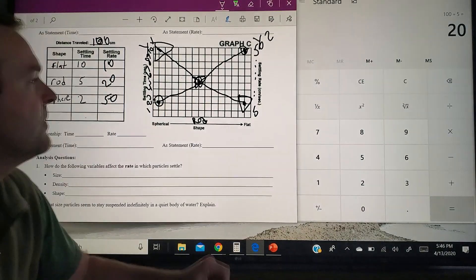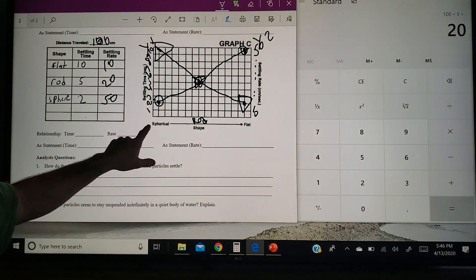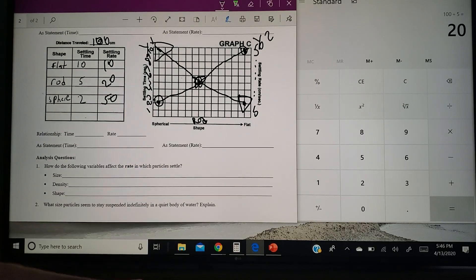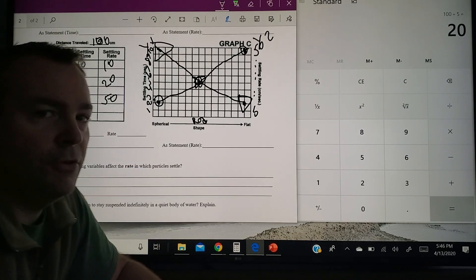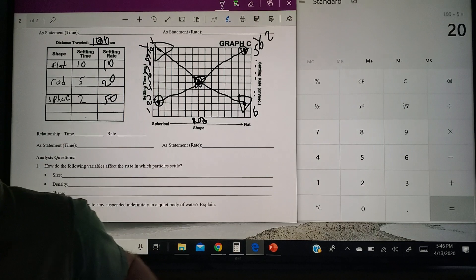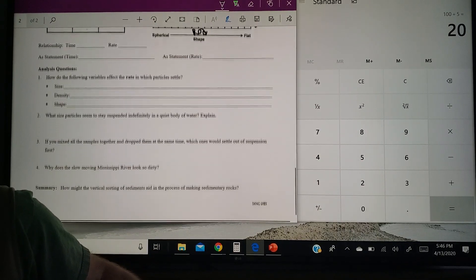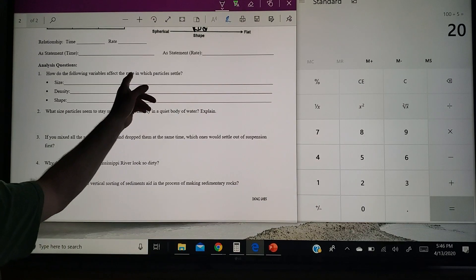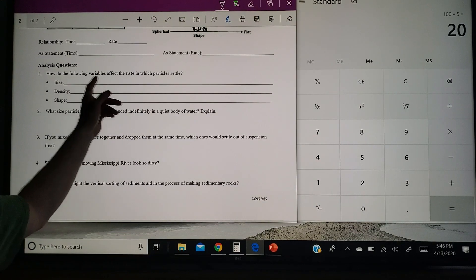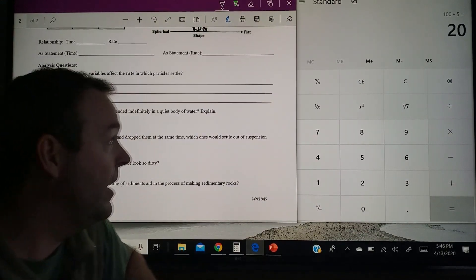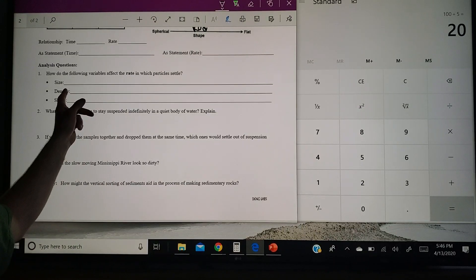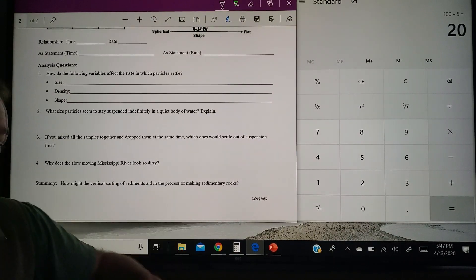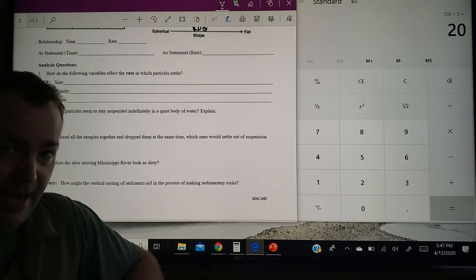Scrolling down for the first set of questions there, how do the following variables affect the rate? Well, the bigger it is, the quicker the rate. The denser it is, the quicker the rate. And the rounder it is, the quicker the rate. That's how you have to word that. Okay.